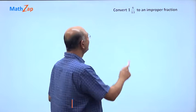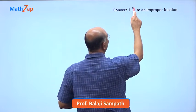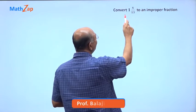Let us now look at this question. Convert 1 and 6 by 13 into an improper fraction. What is the meaning of 1 and 6 by 13?